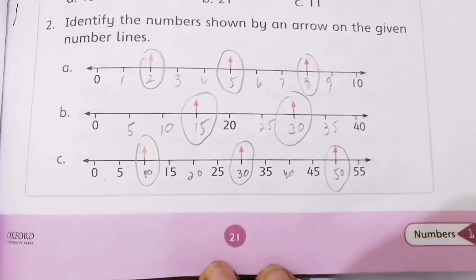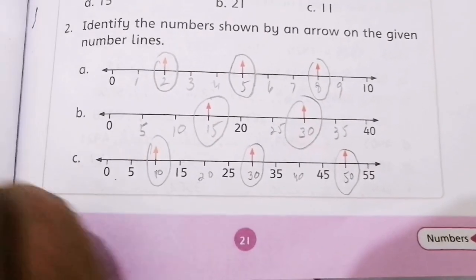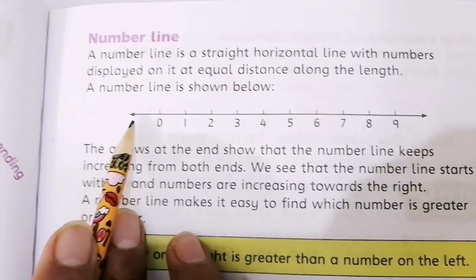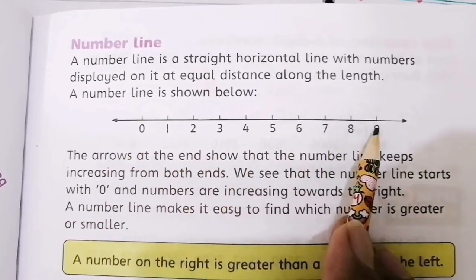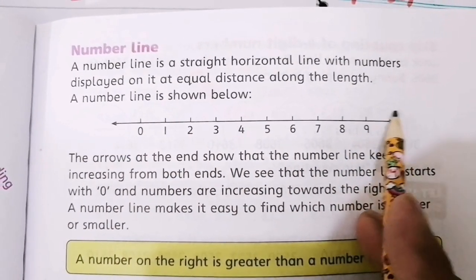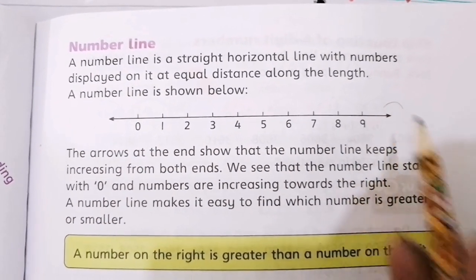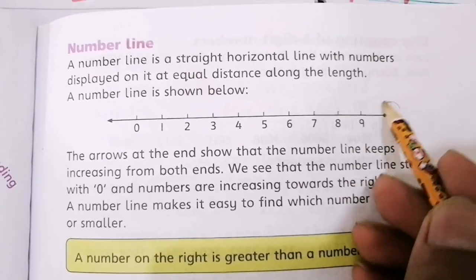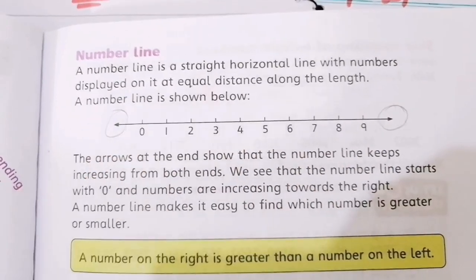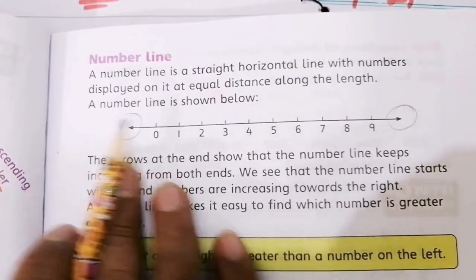Ascending order means that you can practice by yourself. Now we move to page number 21. This is the concept of the number line.